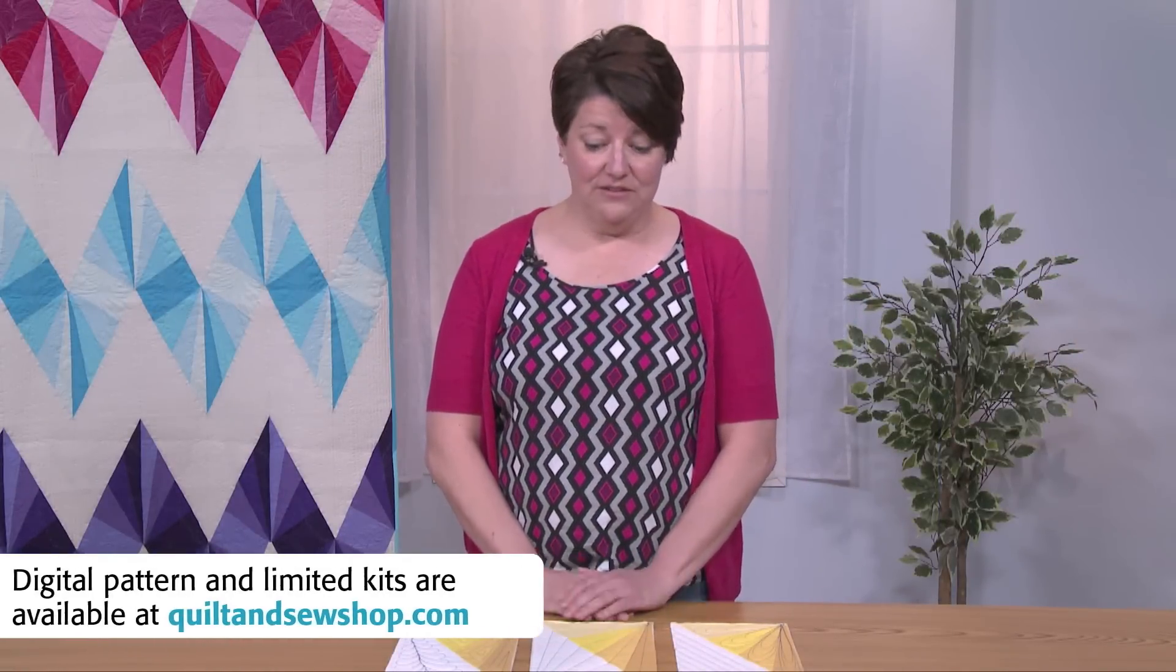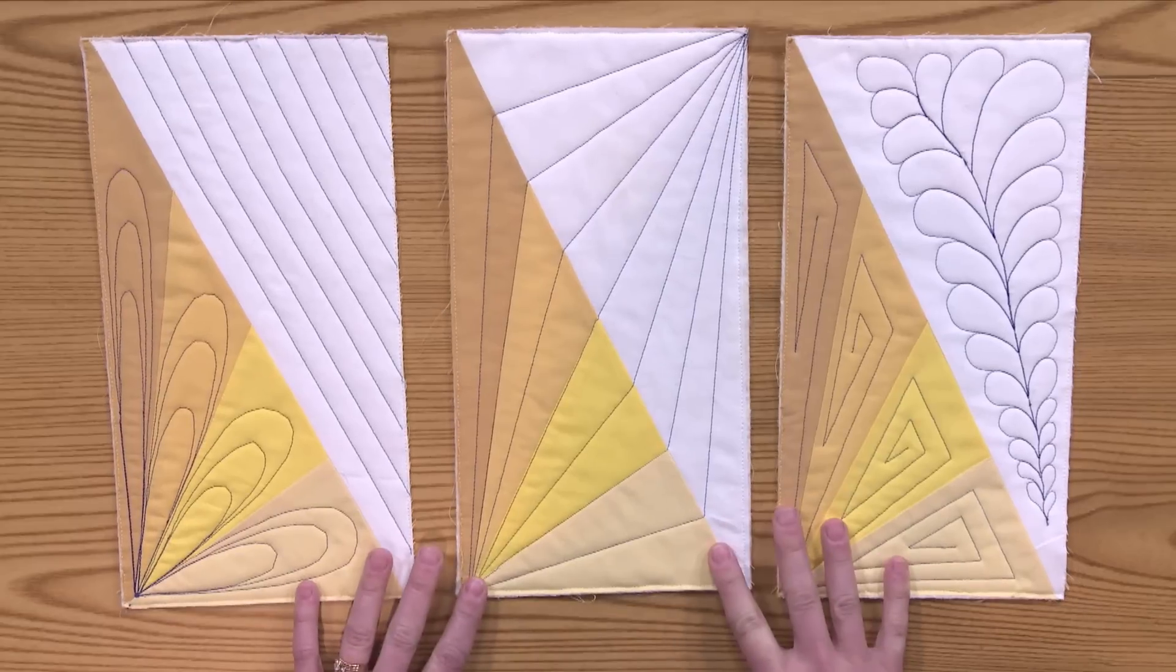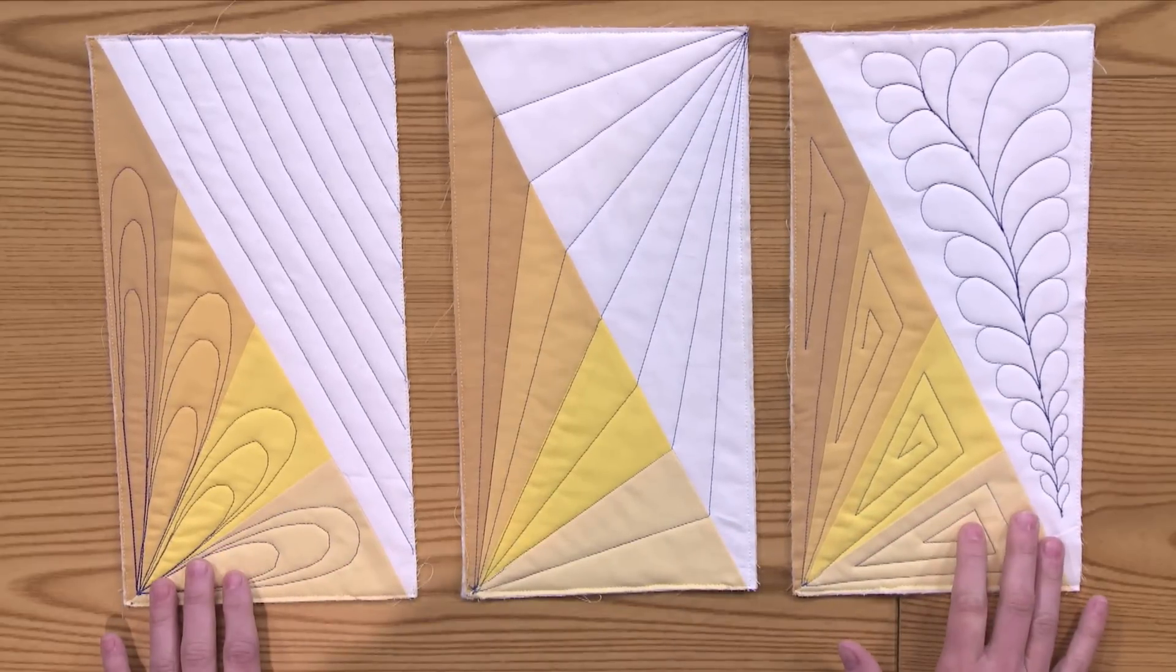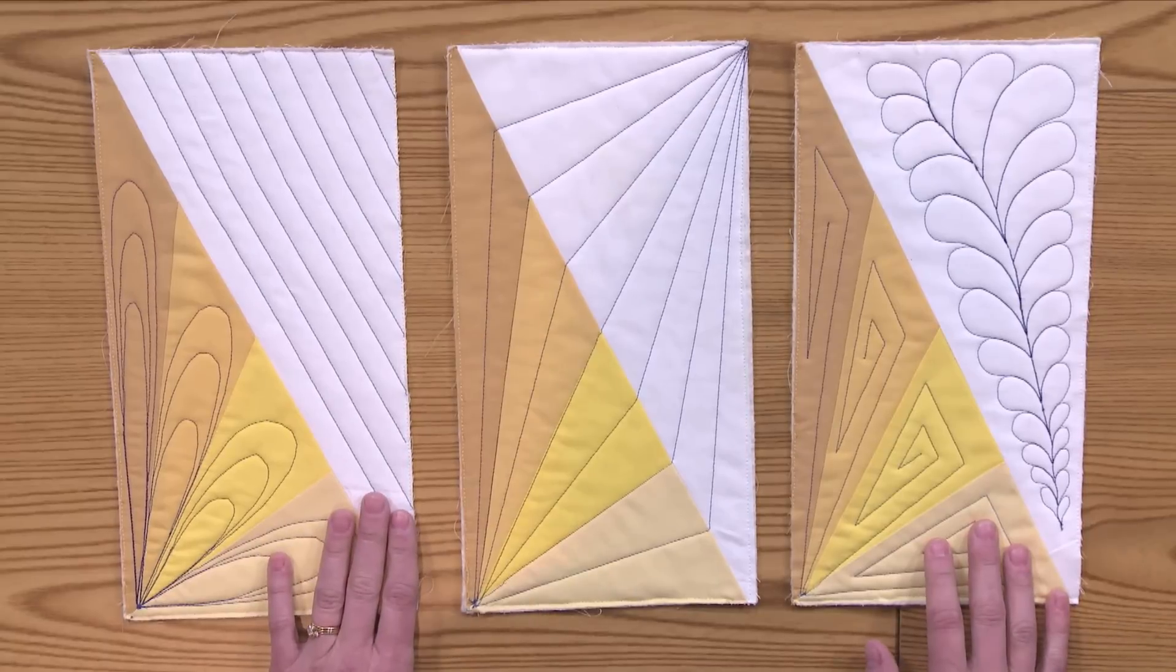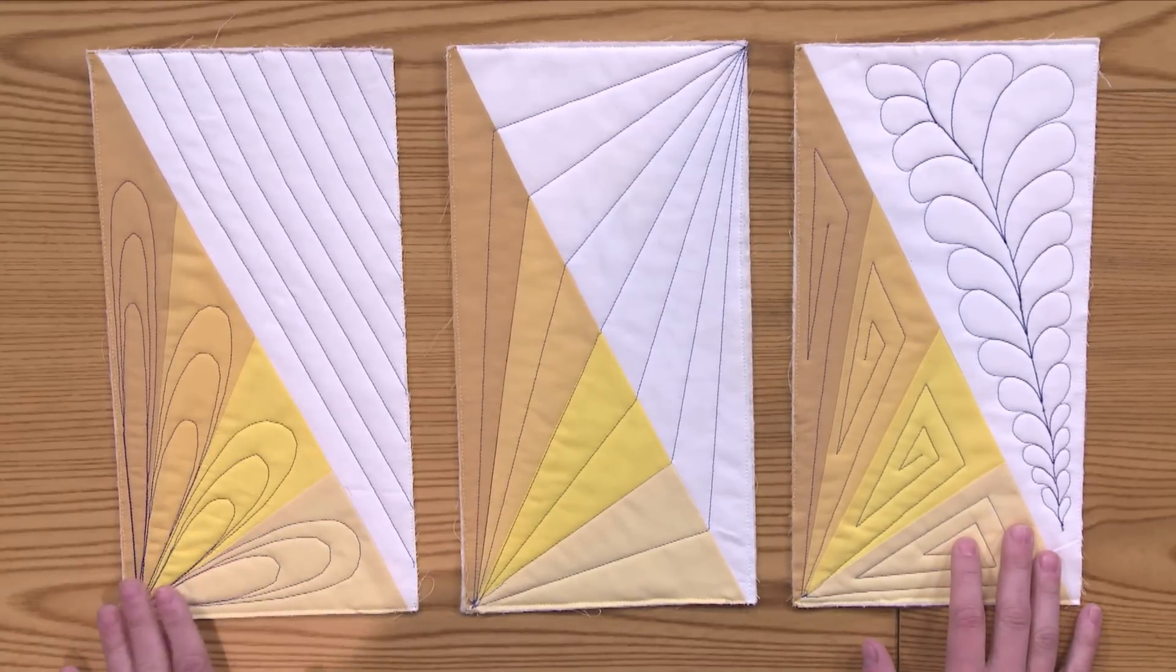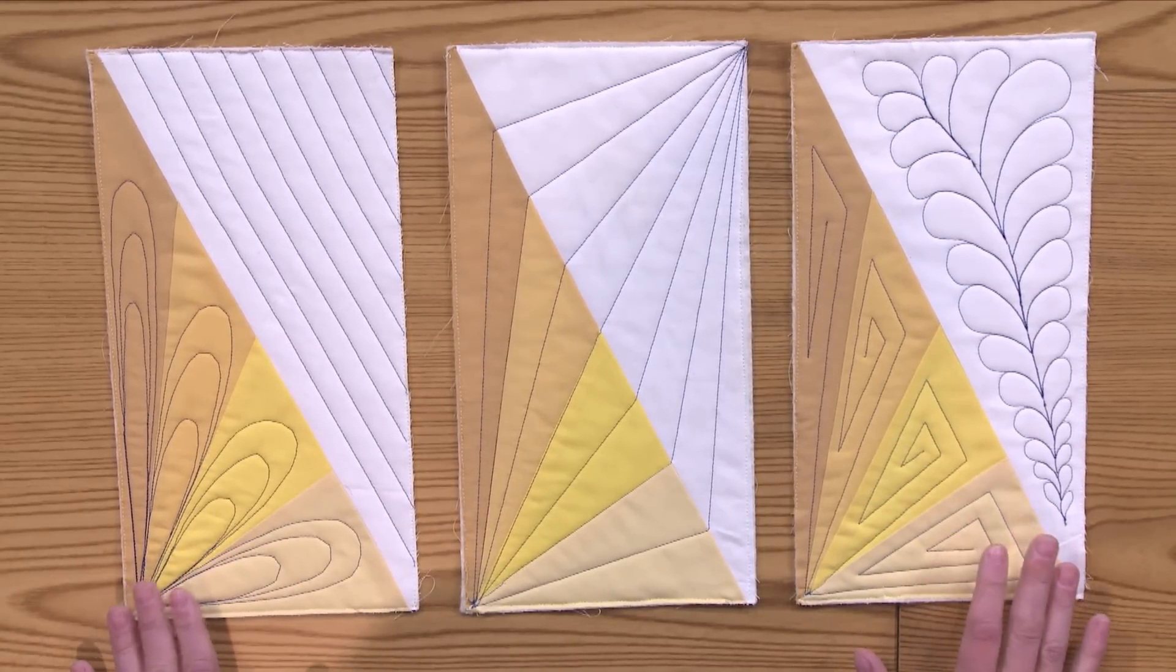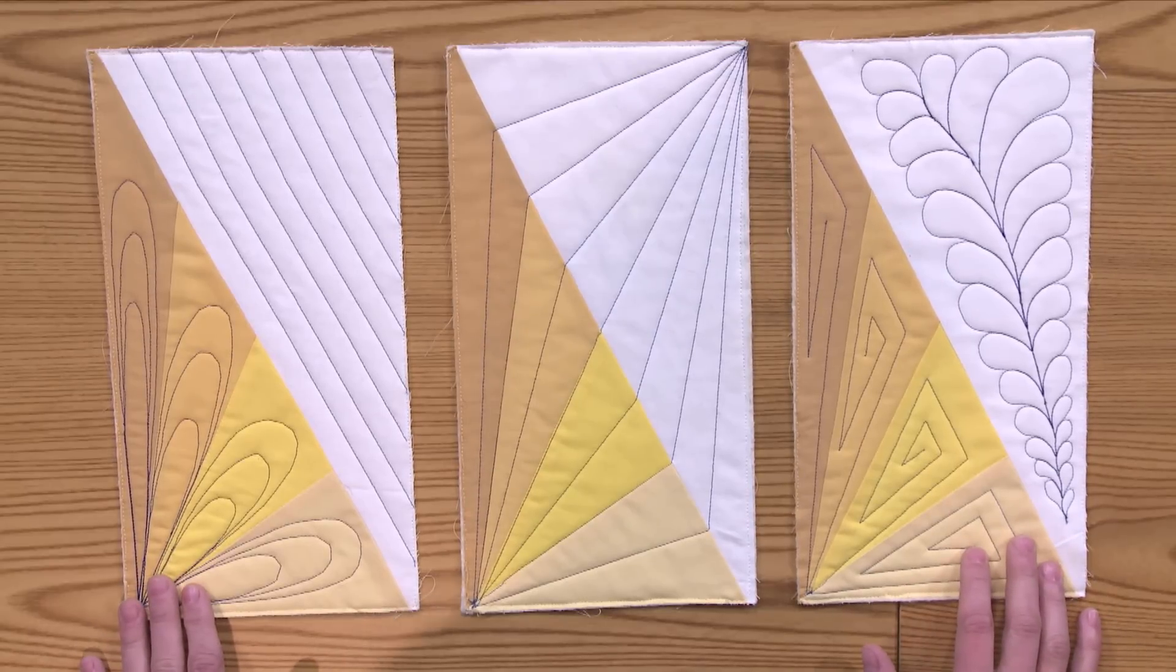So let's take a look at these three blocks. These three blocks were quilted by Hattie Brown on a handy quilter, and as you can see, Hattie used contrasting threads so that you can see the quilting. Obviously, you'd want to use matching thread, and you can easily quilt these on your domestic sewing machine.